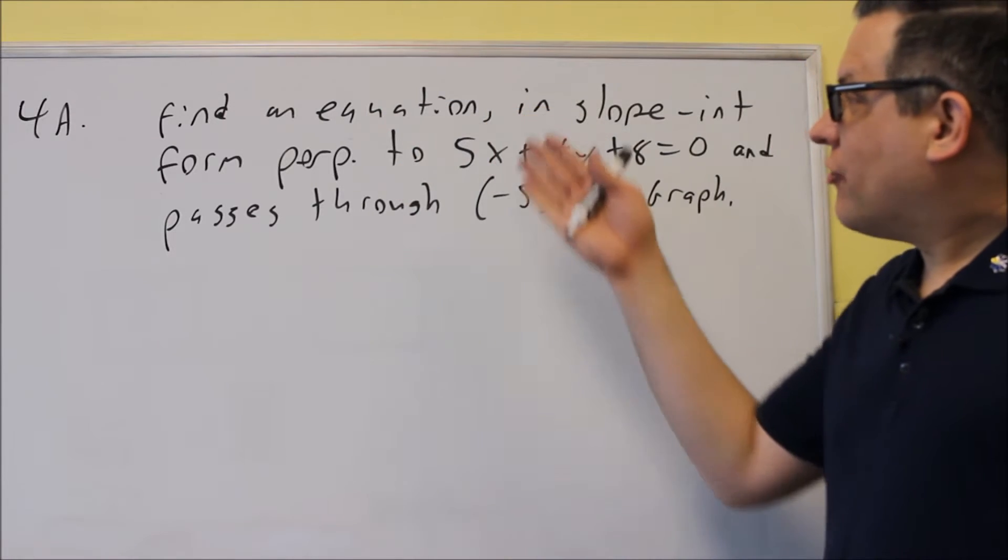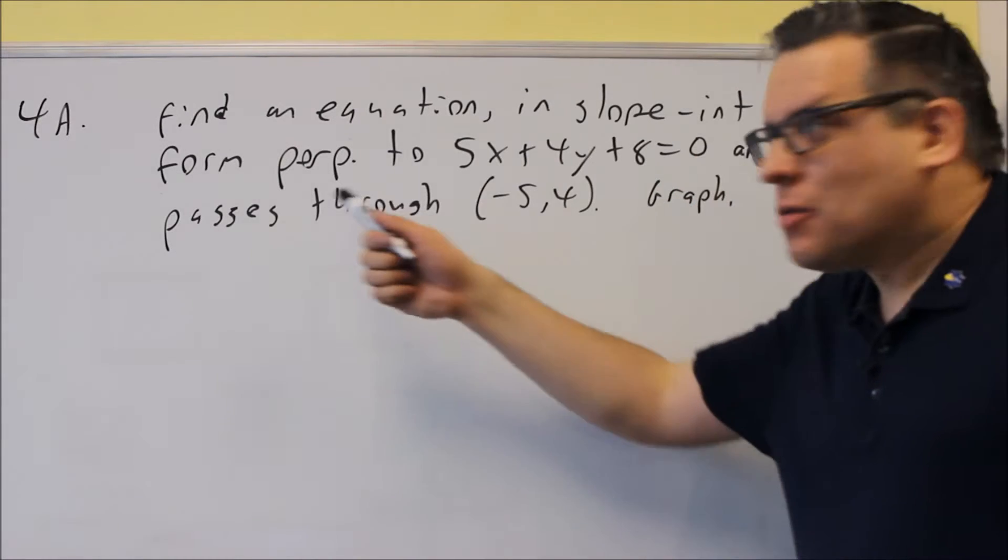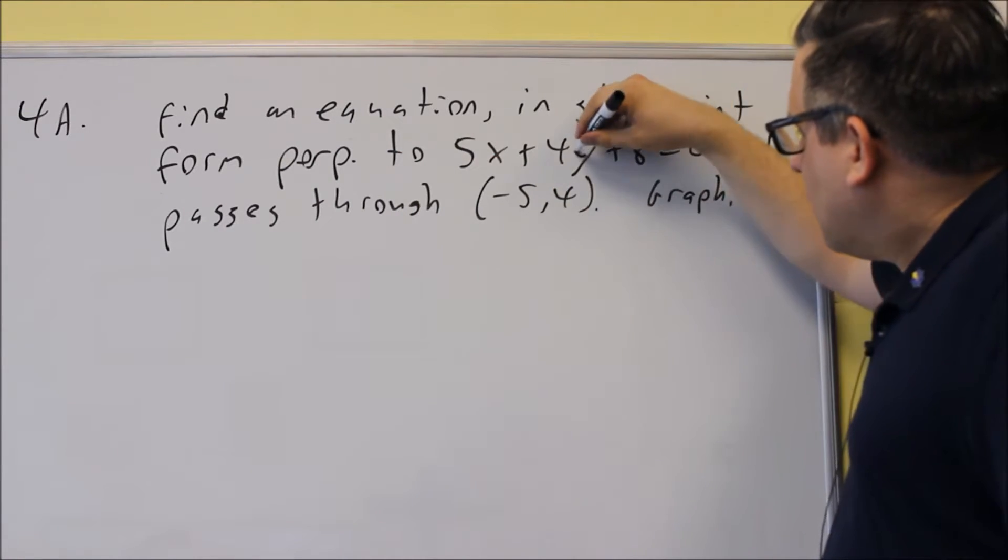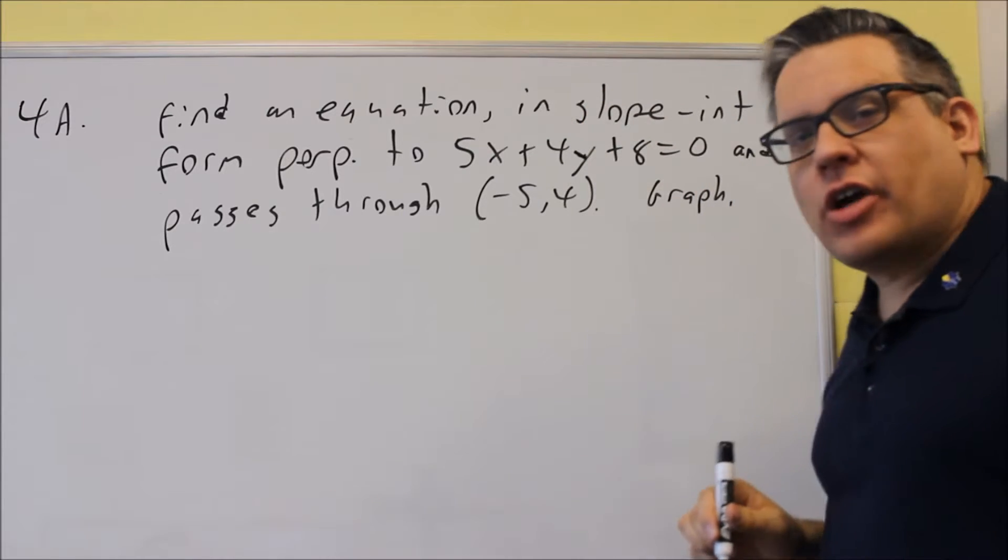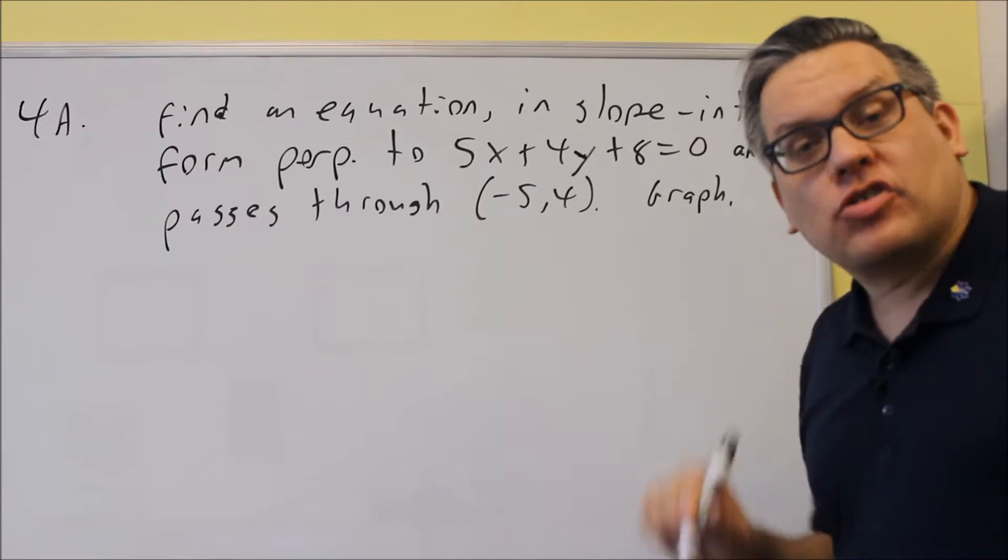For problem 4, we're asked to find an equation in slope-intercept form. Find the equation of a line that is perpendicular to 5x plus 4y plus 8 equals 0, and it has to pass through negative 5, 4. They want you to graph the equation that you come up with.